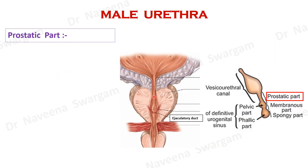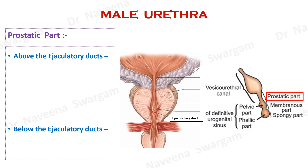Here is the interior of prostatic part of male urethra showing its dorsal wall, with the openings of ejaculatory ducts over the colliculus seminalis. In relation to the openings of ejaculatory ducts, development of prostatic part can be studied as the part above and the part below the ejaculatory ducts.